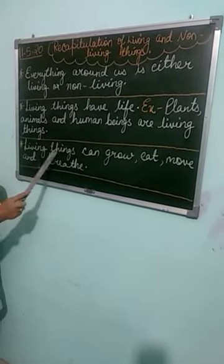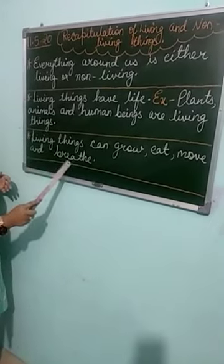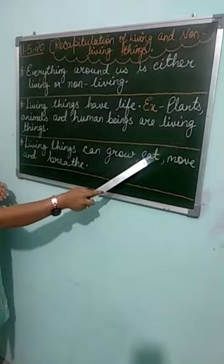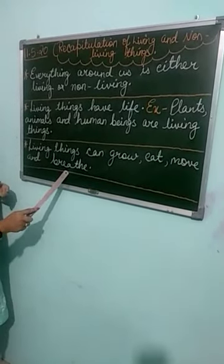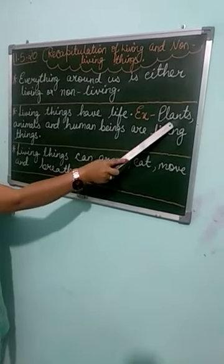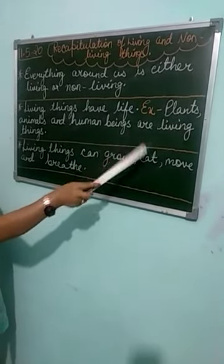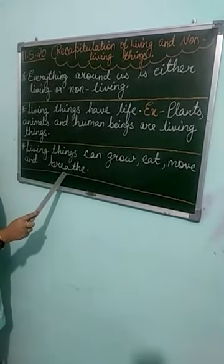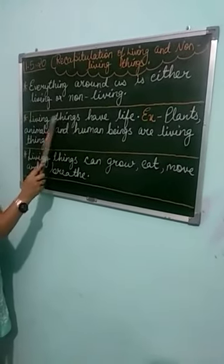Third point: living things can grow, eat, move, and breathe. Living things क्या कर सकते हैं? वो grow कर सकते हैं, वो खा सकते हैं, वो move कर सकते हैं, and they can also breathe. But one main thing — plants cannot move. They can grow, they can eat, but they cannot move. Plants can also breathe, but they cannot move. Still, they are considered living things.